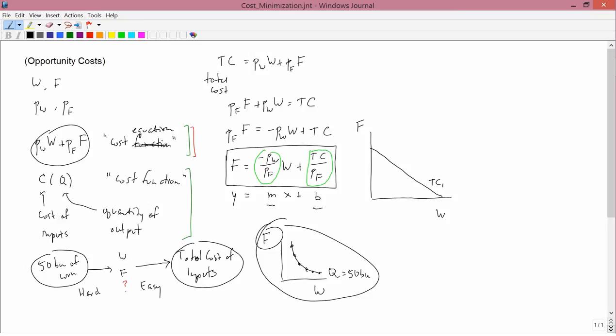This should remind you of a budget constraint, because the mathematics is exactly like a budget constraint. There's one significant difference between this and a budget constraint, and it doesn't have anything to do with the math. A consumer only has one budget constraint, because the consumer only has one fixed amount of income.